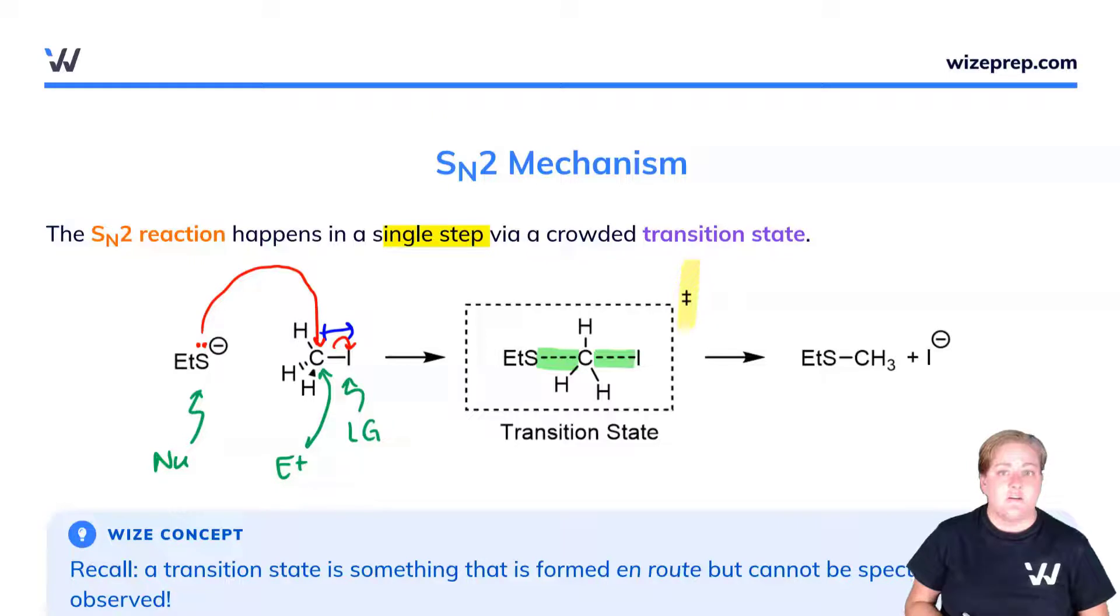This is why the SN2 reaction is favored by non-crowded carbons, because of this really crowded transition state. Here we've used exclusively hydrogen for the methyl carbon, which is the one that proceeds the fastest in this reaction.